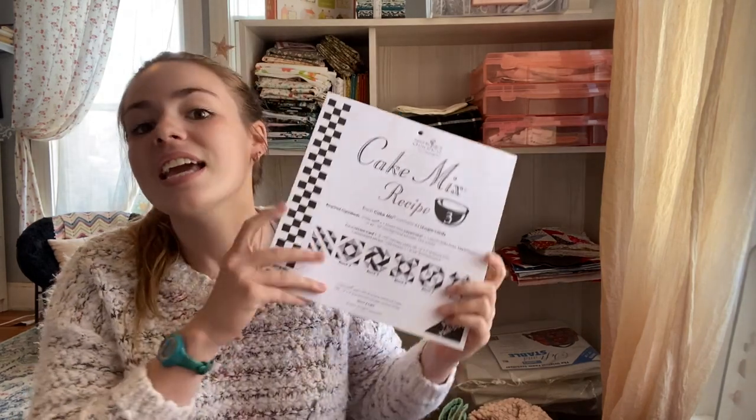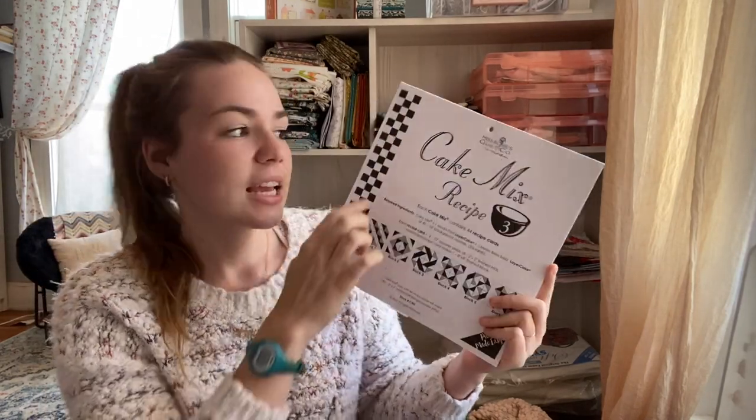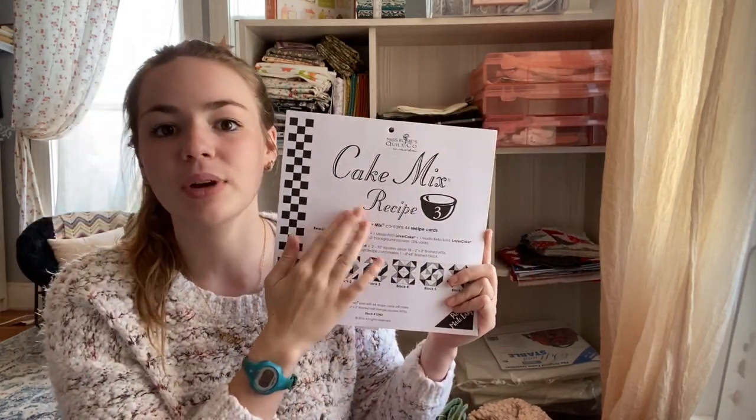I have a couple favorite ways to make half-square triangles but by far my top favorite is the cake mixes. These are made by Moda and designed by Miss Rosie and there are lots of different cake mix recipes. So this one is recipe 3.